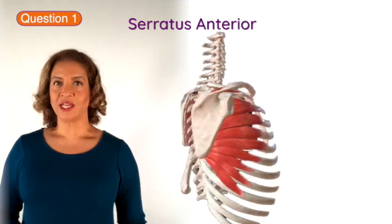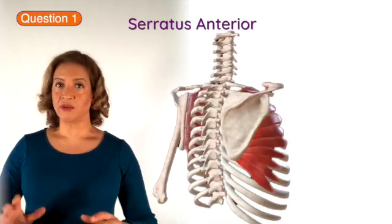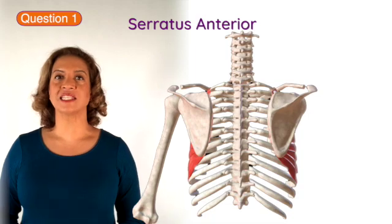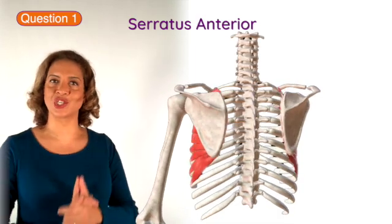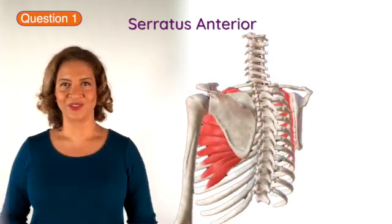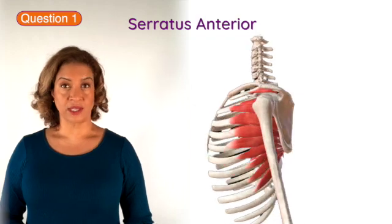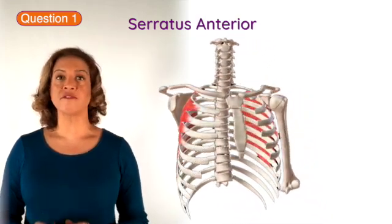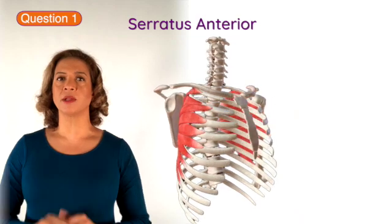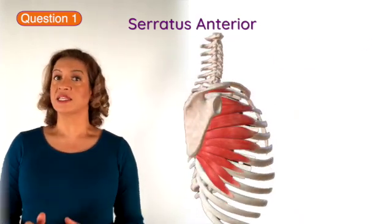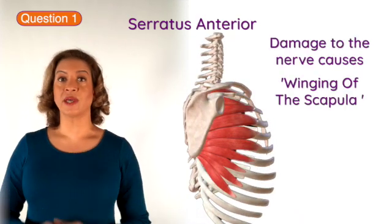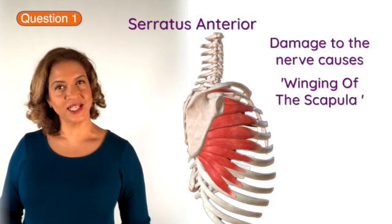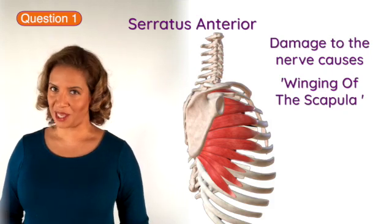The serratus anterior laterally rotates the scapula and it protracts the scapula, which means that it keeps the scapula tight against the chest wall. Damage of the long thoracic nerve can cause weakness of the muscle, and clinically this can be seen by a very prominent medial border of the scapula that sticks up posteriorly as the patient tries to elevate their arm. This sign is known as winging of the scapula.